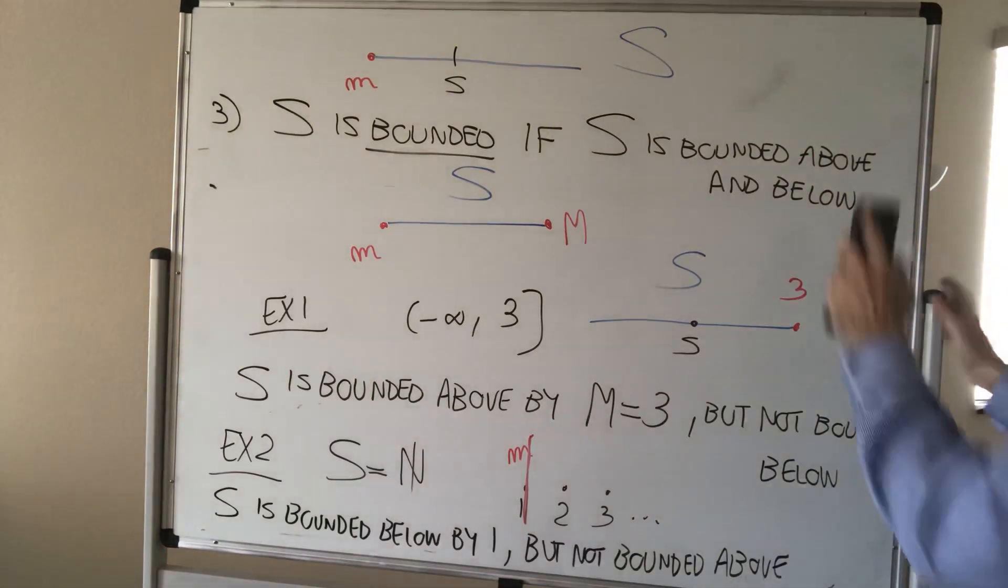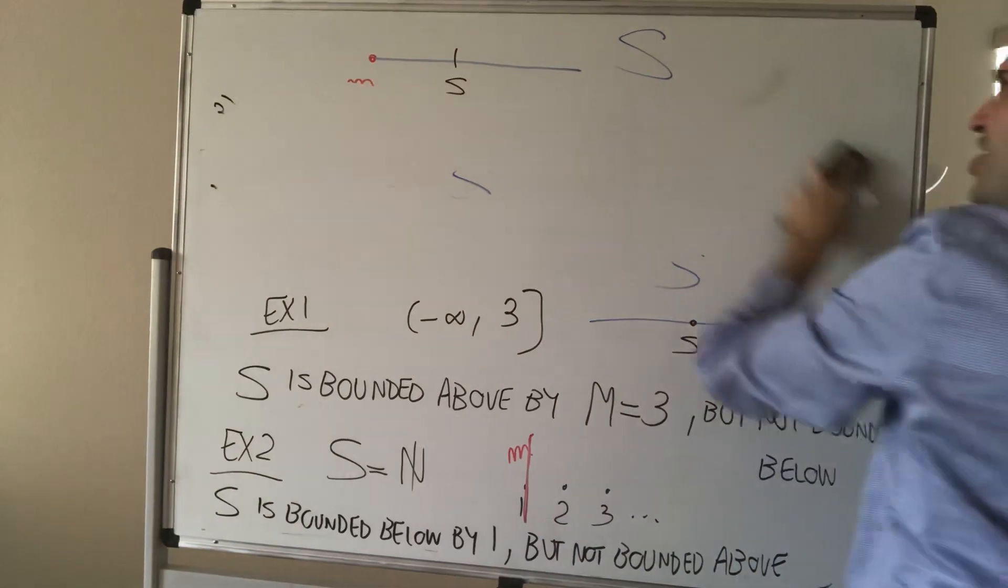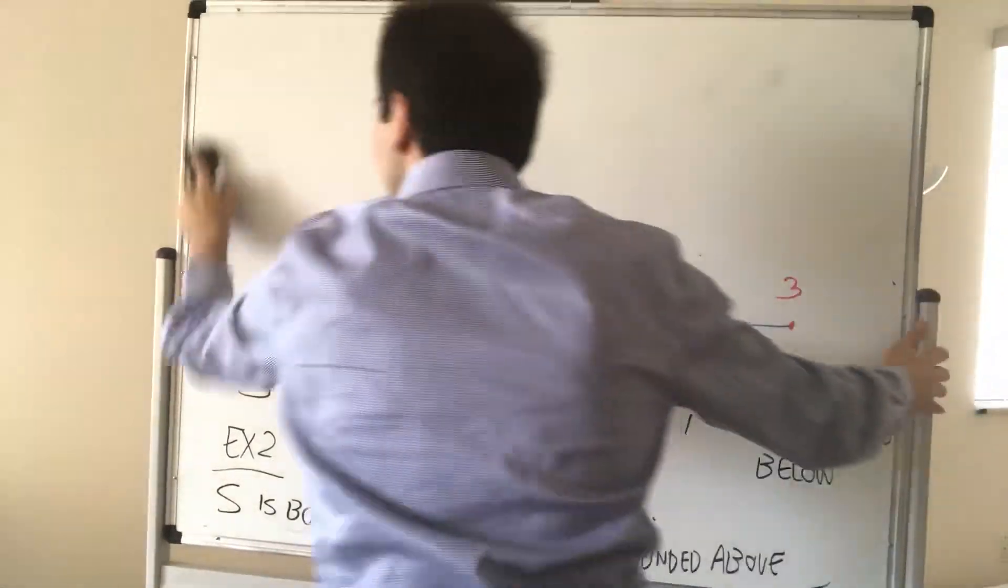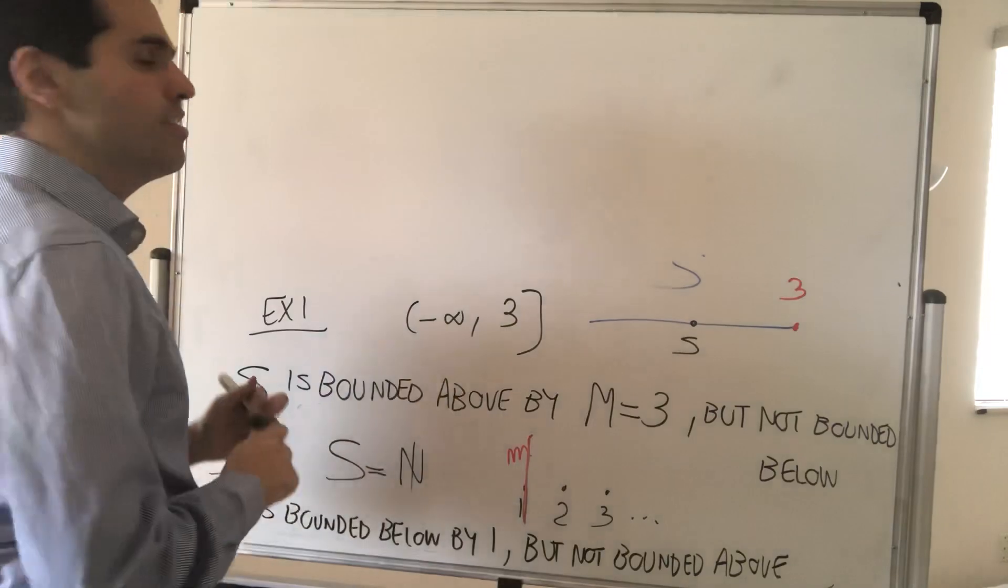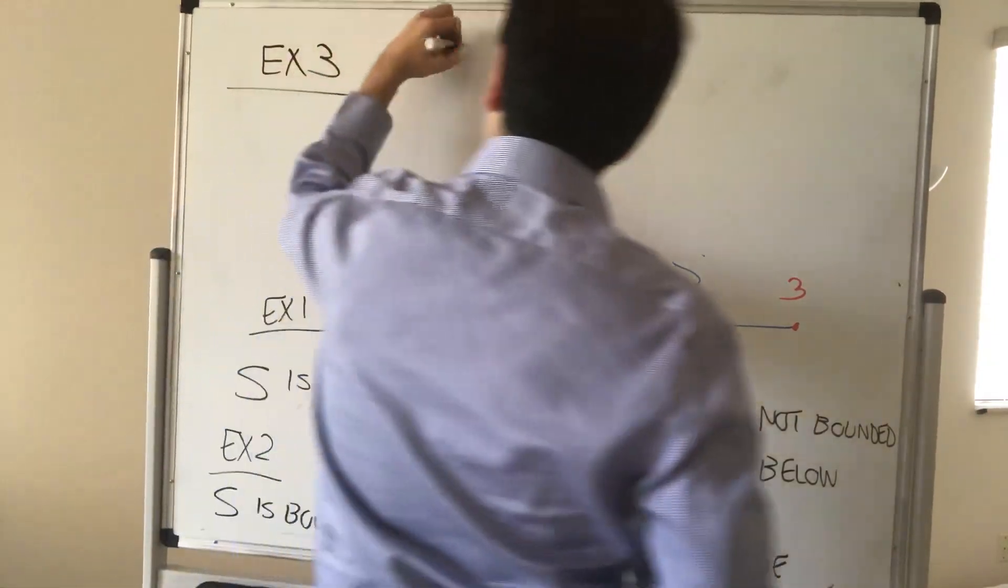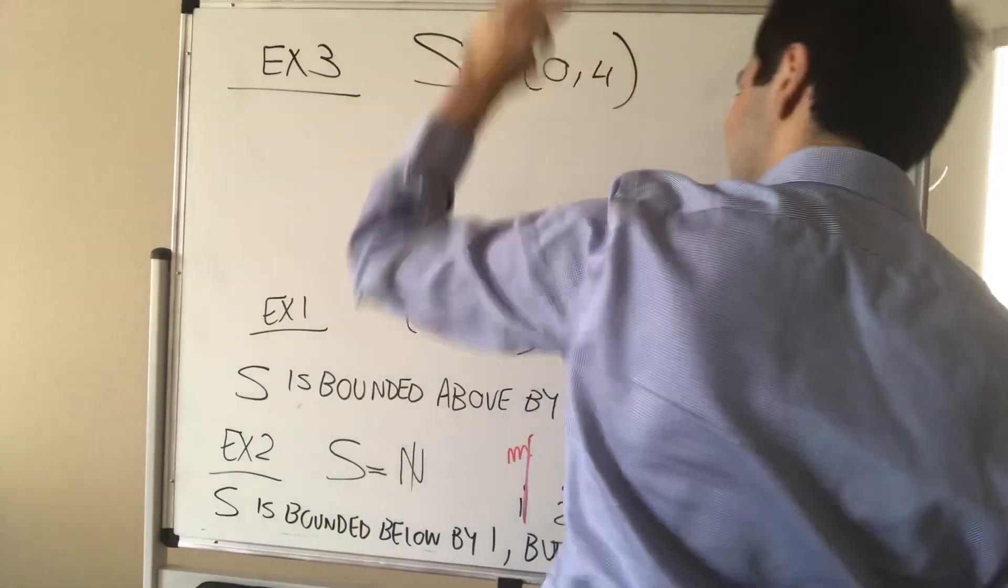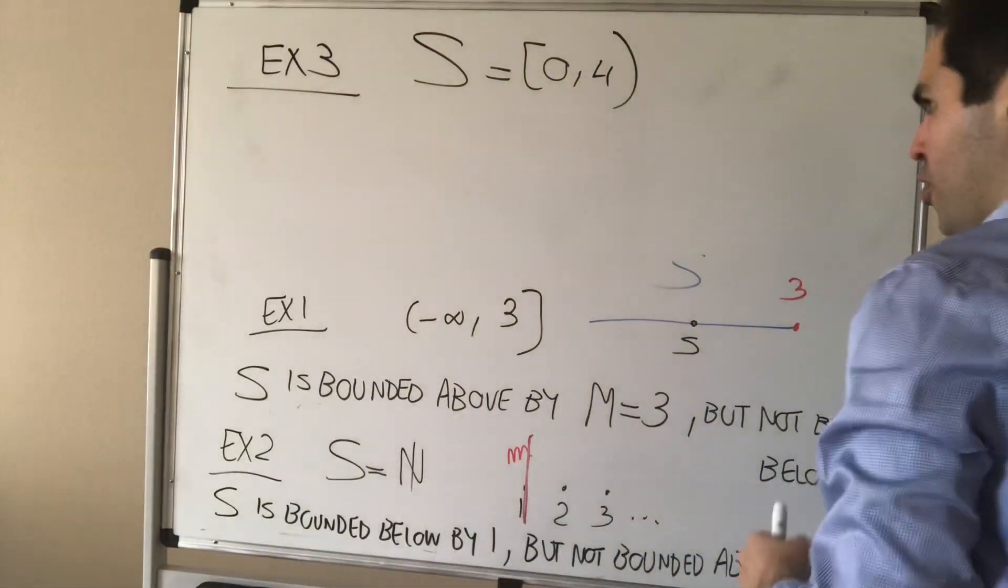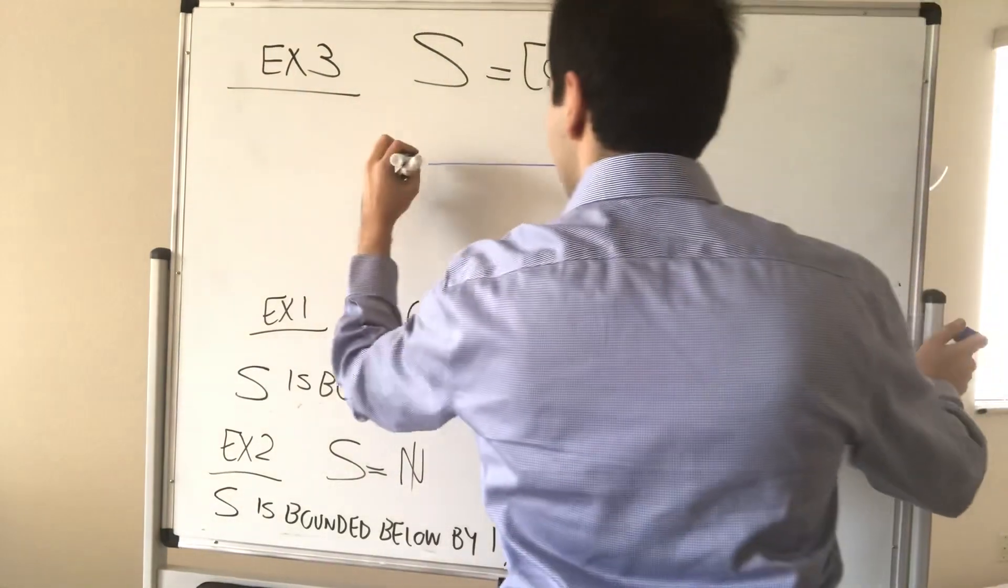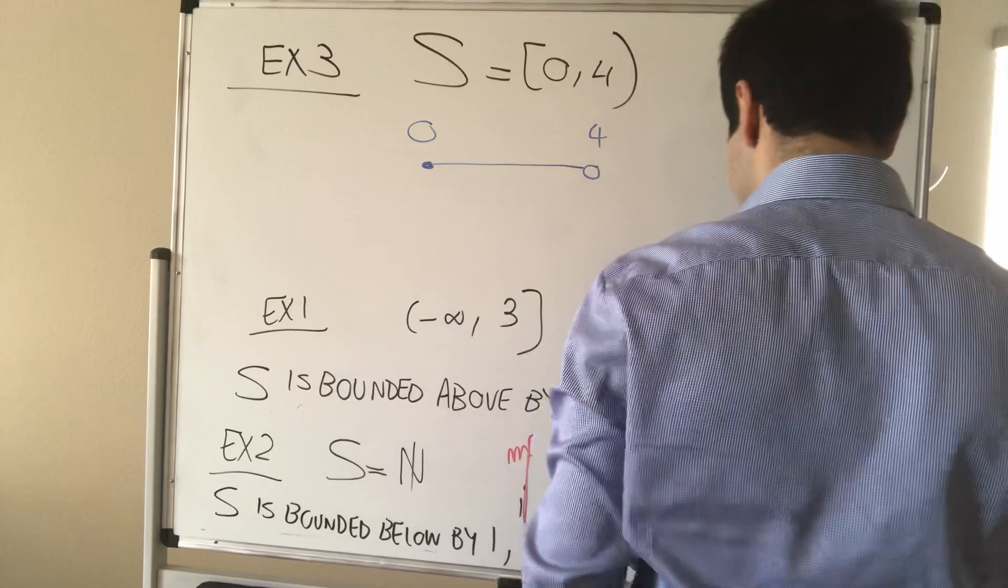And more interestingly, let's study the next example. And again, this will lead to the definition of sup, which again is the most important concept, in my opinion, of analysis. Take the interval S to be zero comma four, but let's not include the number four. So this is zero, and this is four, and this is S.